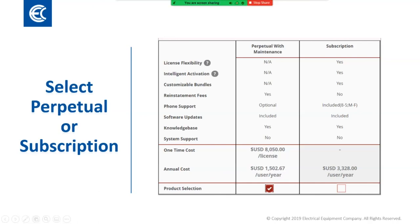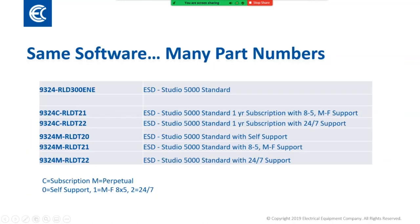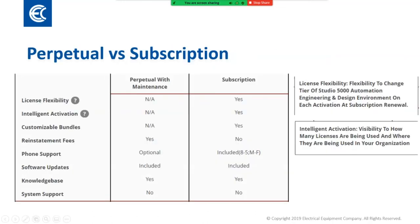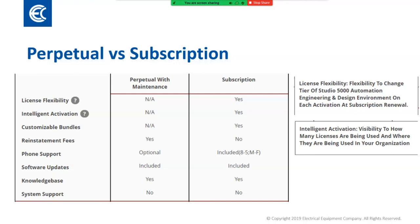Looking at license flexibility and intelligent activation: when you come up for renewal, you have the option to upgrade your maintenance terms. For a subscription, upon renewal you could upgrade the license type and the subscription terms. Intelligent activation gives you visibility into how many licenses are being used and where they're being used — you can view that content in the portal by mousing over any of the gray buttons that pop up.